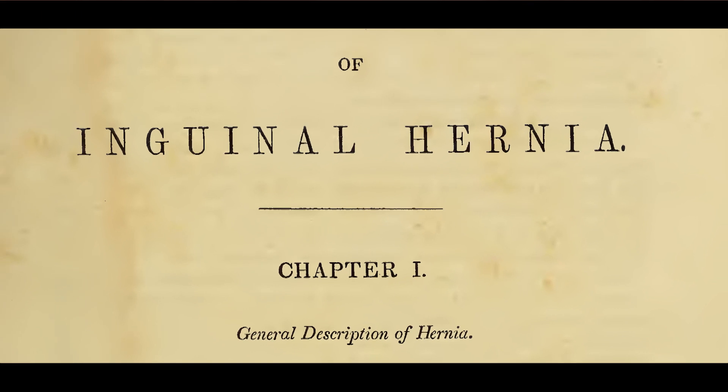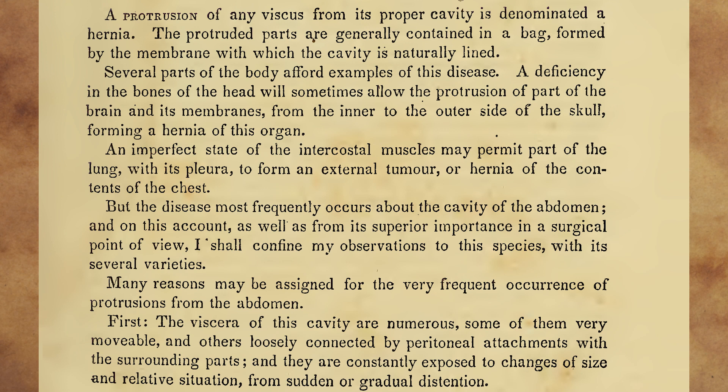General Description of Hernia. A protrusion of any viscus from its proper cavity is denominated a hernia. The protruded parts are generally contained in a bag, formed by the membrane with which the cavity is naturally lined. Several parts of the body afford examples of this disease. A deficiency in the bones of the head will sometimes allow the protrusion of part of the brain and its membranes, from the inner to the outer side of the skull, forming a hernia of this organ. An imperfect state of the intercostal muscles may permit part of the lung with its pleura to form an external tumour or hernia of the contents of the chest.